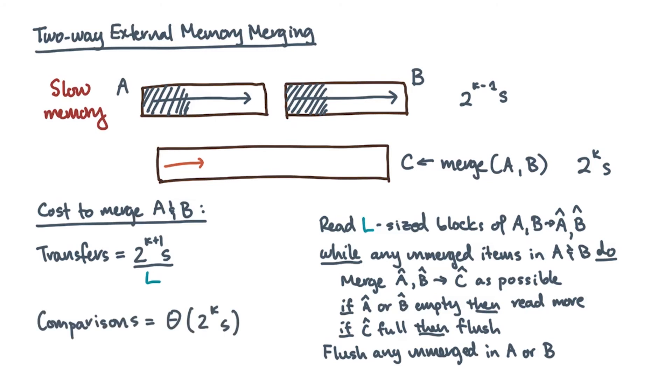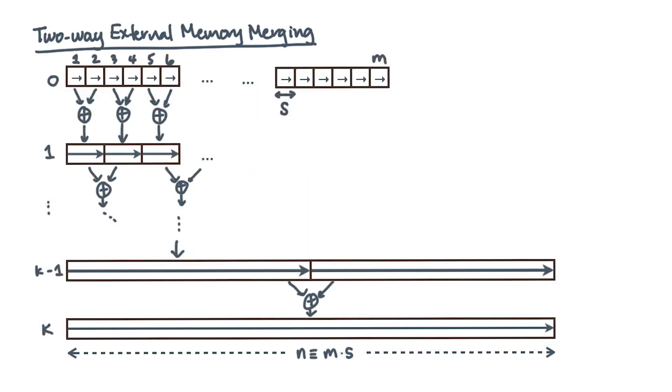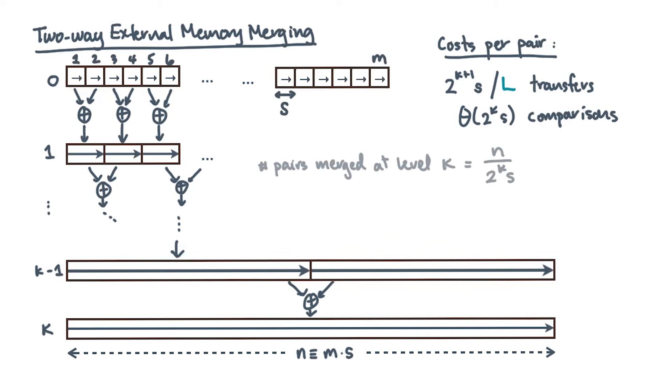Let's go back to the original merge tree. The analysis was just for one pair. Now at each level, you can count the number of pairs. That will be n / (2^k × s).